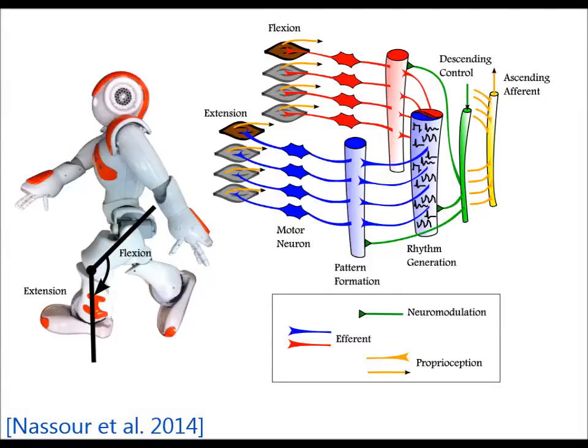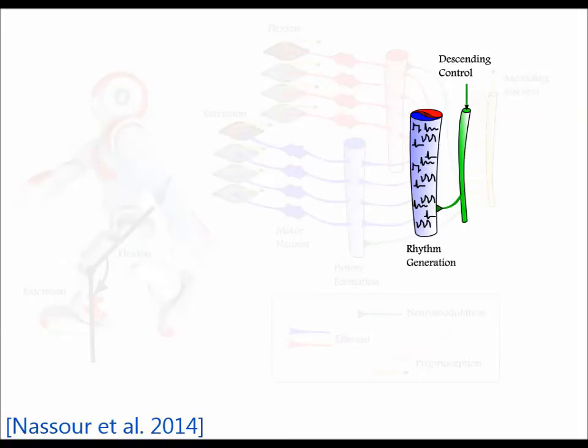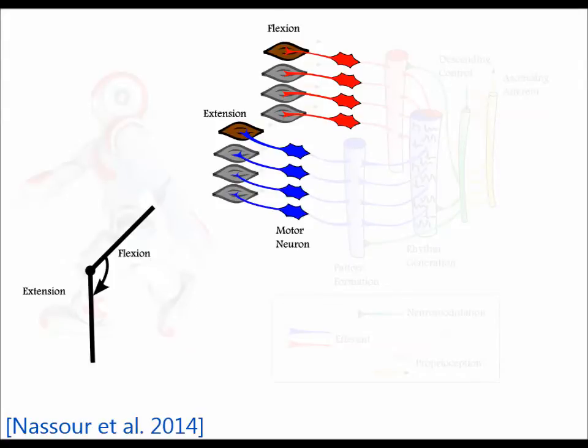this computational model of the CPG receives tonic drive from a high control level. The descending drive signal allows the CPG to generate basic locomotor behaviors by providing alternating activation of the corresponding motor neurons that drive joint actuators.